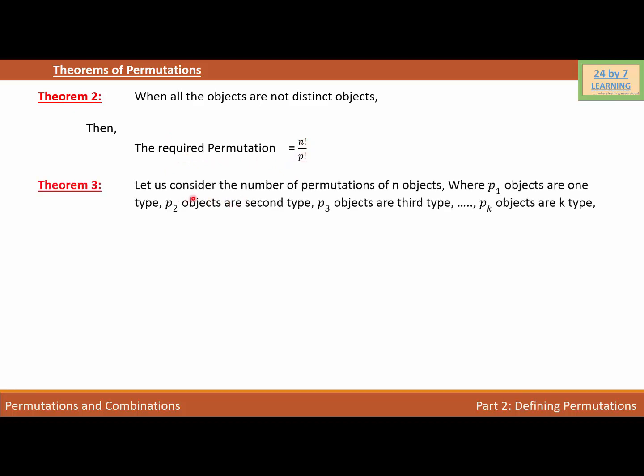Theorem 3. Let us consider the number of permutations of n objects where p1 objects are one type, p2 objects are the second type, p3 objects are the third type, and in the same way pk objects are k type.